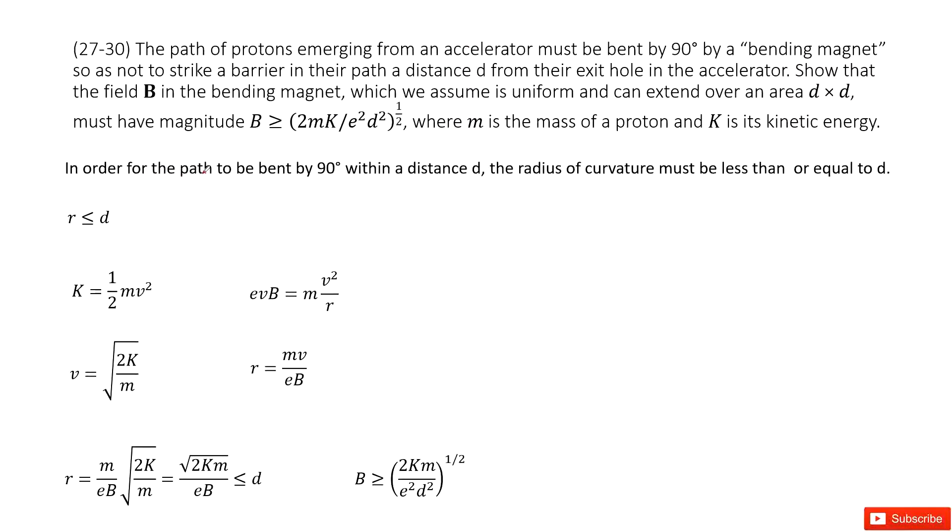So that means in order for the path to bend 90 degrees within a distance d, the radius for this circle must be smaller than d, smaller or equal to d.